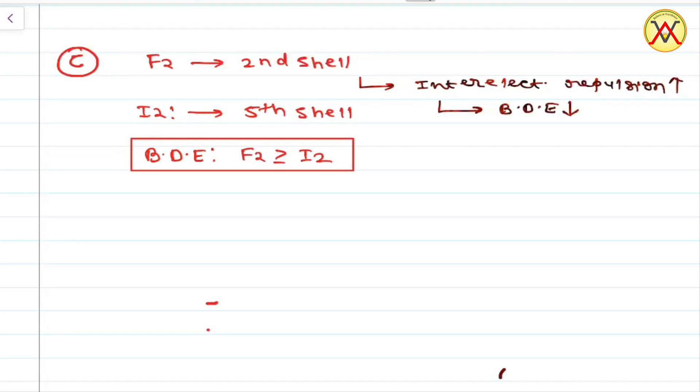In option D we have molecules HF and O2. We know that HF has single bond character and O2 possesses double bond character.